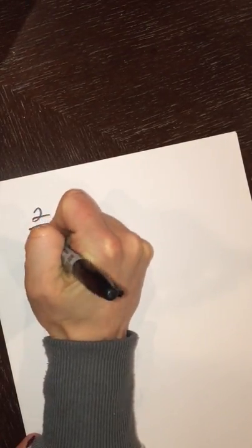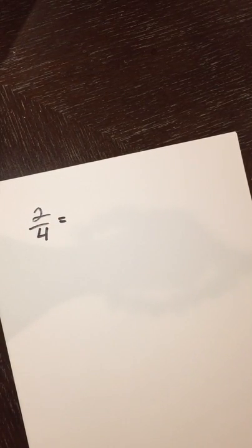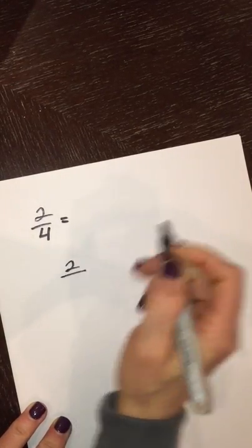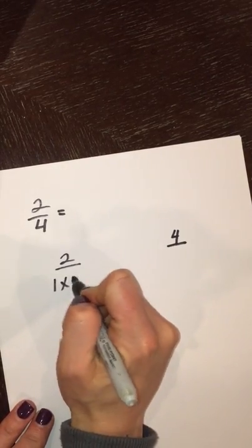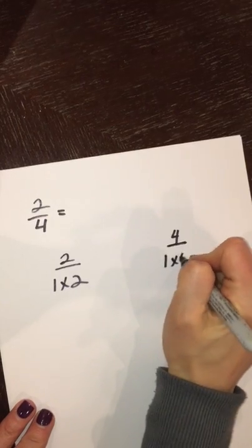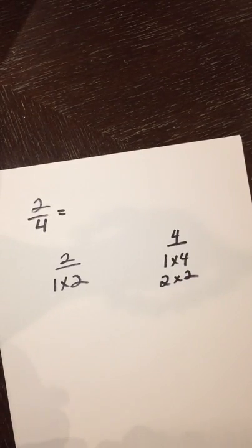So let's say we want to find the simplest form of two-fourths. Well, the first thing I'm going to do is look for the factors of both two and four. So when I do that, I know that one times two, those are factors of two, and my factors of four are one times four and two times two.